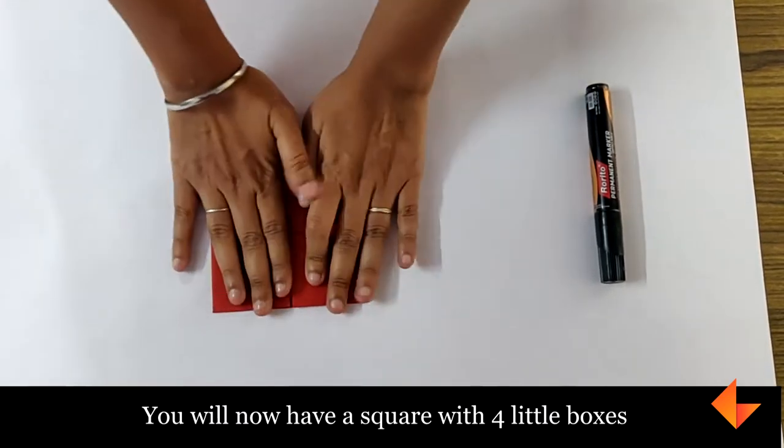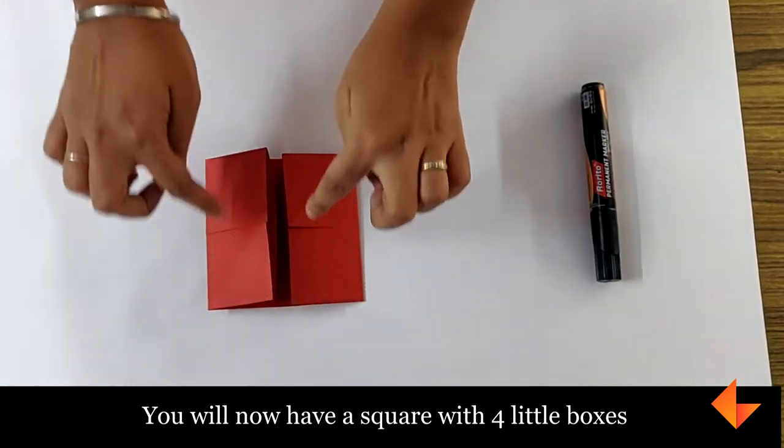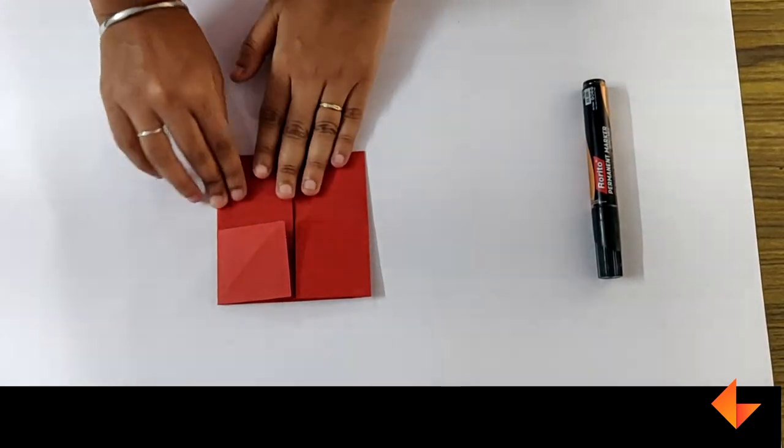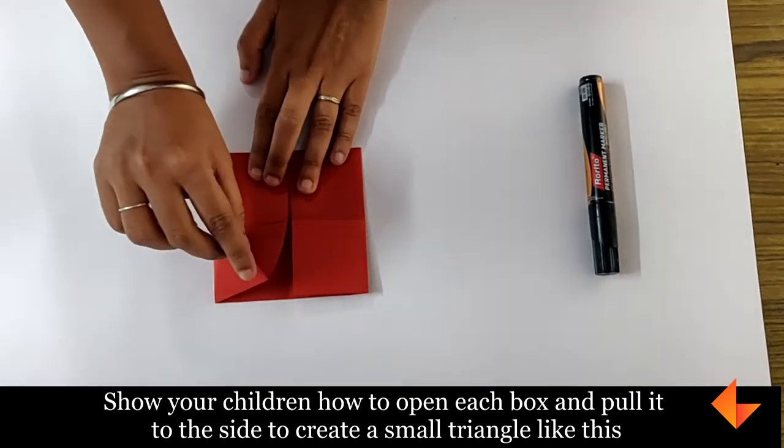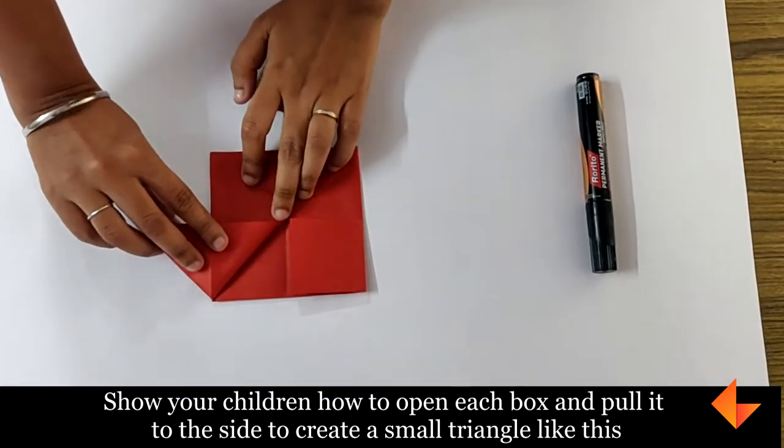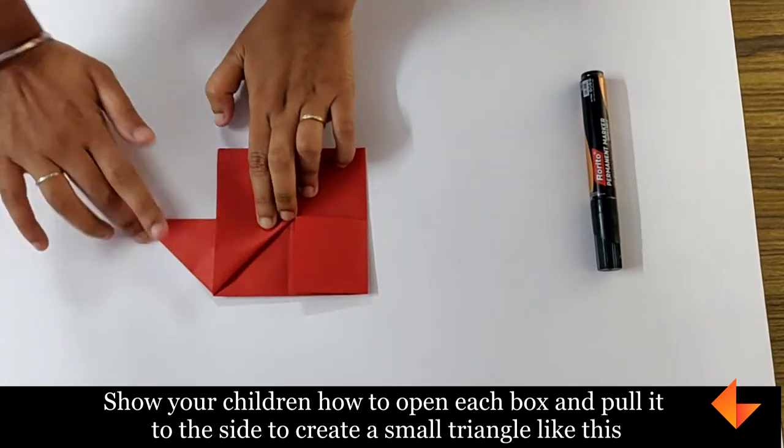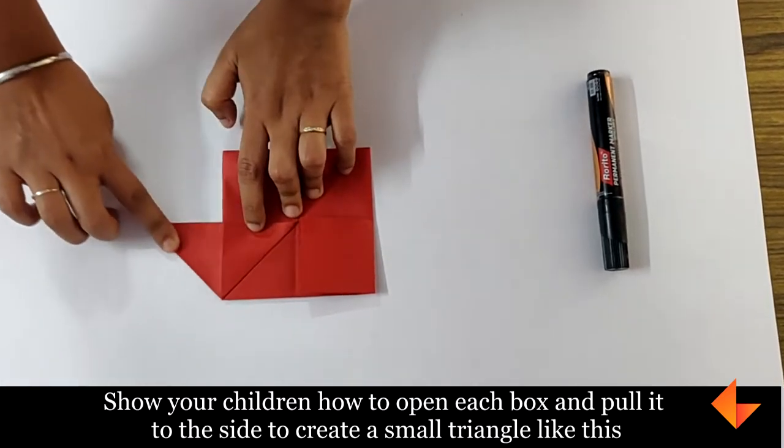You will now have a square with four little boxes. Show your children how to open each box and pull it to the side to create a small triangle like this.